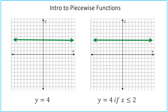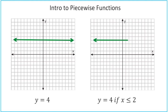Using the same line y equals 4, now we only want it when x is less than or equal to positive 2. We identify x equals 2 on the graph and erase the portion to the right. Since the condition includes equal to, the point at 2, 4 is a solution, so we place a solid point there and leave the line going to the left.